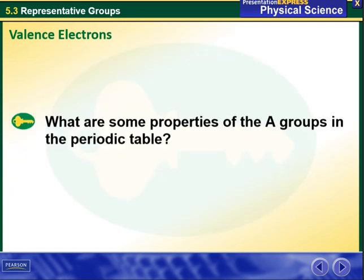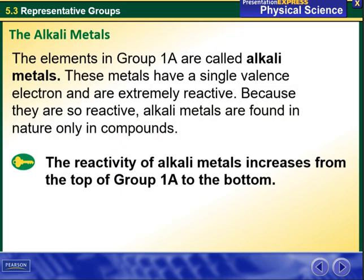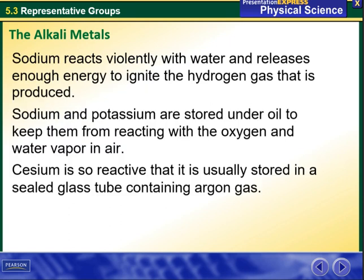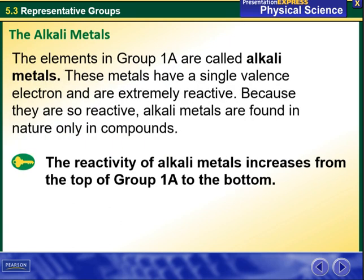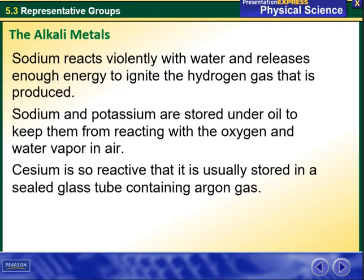What are some properties of the A groups in the periodic table? The elements in group 1A are called the alkali metals. These metals have a single valence electron and are extremely reactive. Because they are so reactive, alkali metals are found in nature only in compounds. The reactivity of alkali metals increases from the top of the group to the bottom.